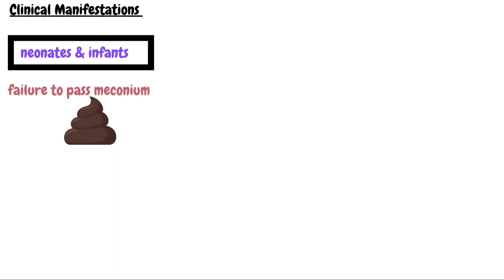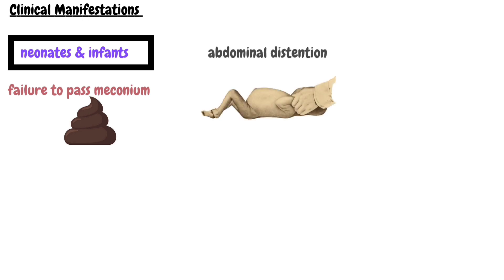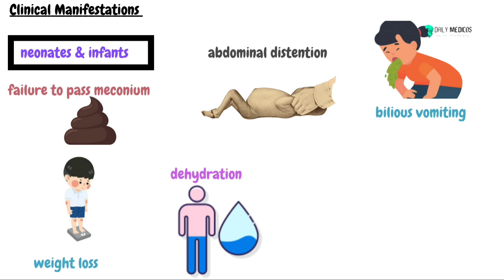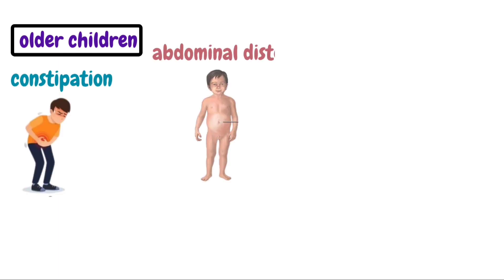The clinical features differ in infants and older children. In neonates and infants, the initial symptom is failure to pass meconium, which is the first stool, mainly passed within the first two days of life. Abdominal distension occurs within one to two days after birth due to stasis of feces, while bile-stained vomiting occurs due to intestinal obstruction. Fluid loss and dehydration may also occur. Shock may develop if the condition is not treated promptly. Enterocolitis can occur due to fecal stagnation.